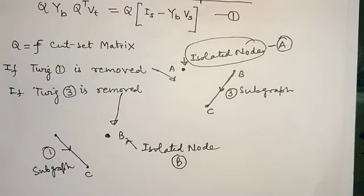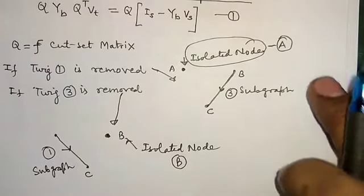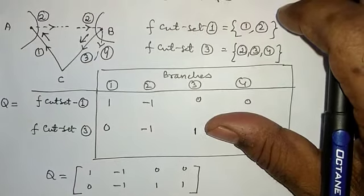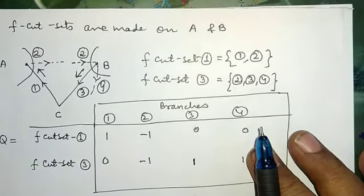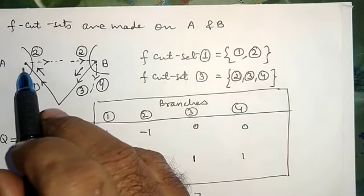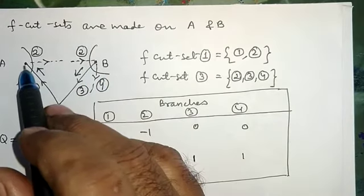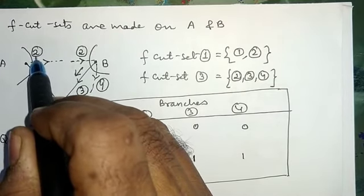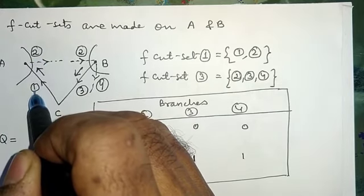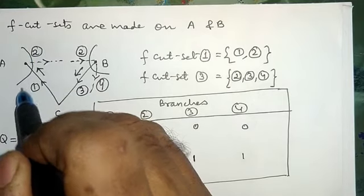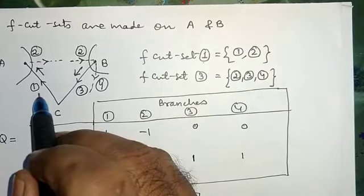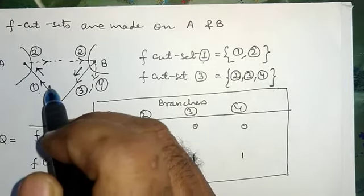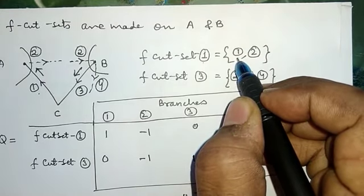Therefore, two F-cut sets will be formed at these isolated nodes. At isolated node A, if I connect link number 2, then tree branch 1 and chord 2 will form an F-cut set. This F-cut set will be represented by tree branch number 1, and this F-cut set which is formed at isolated node A will be consisting of branches 1 and 2.